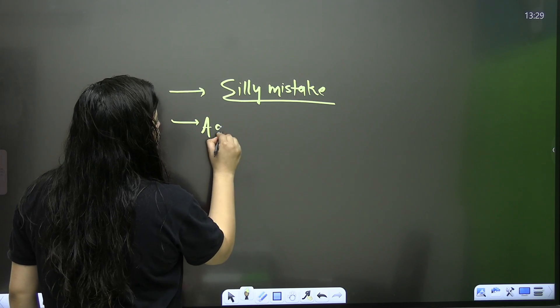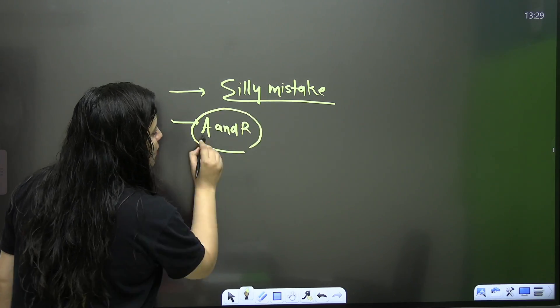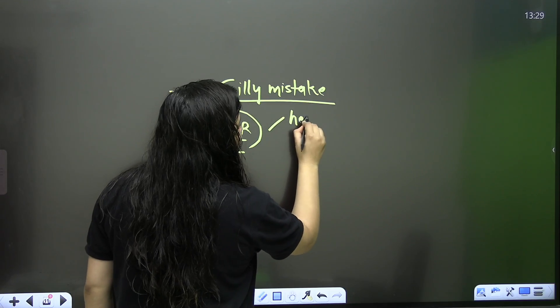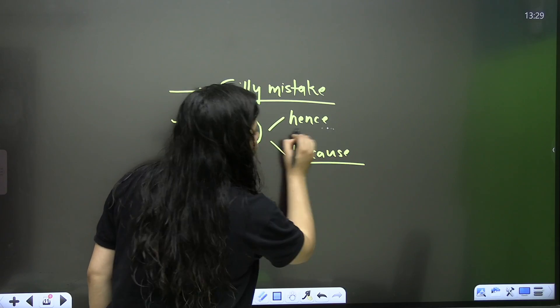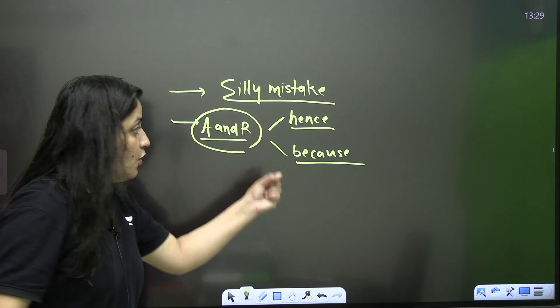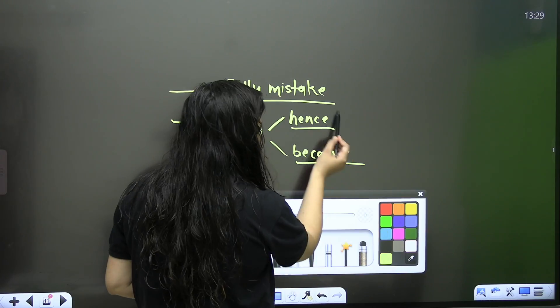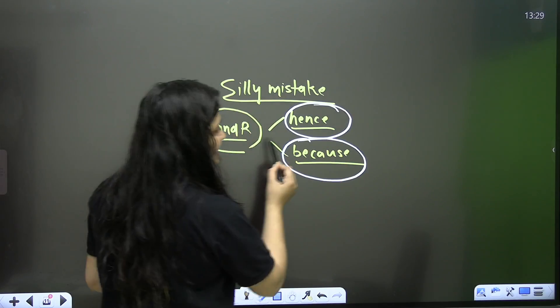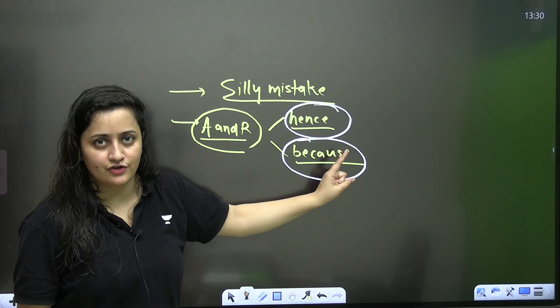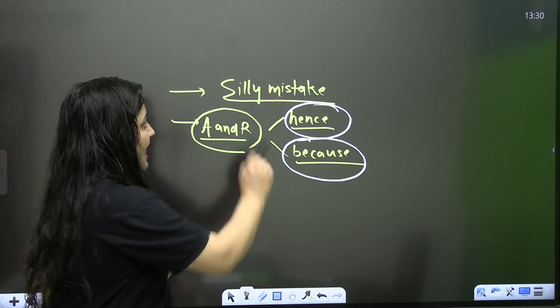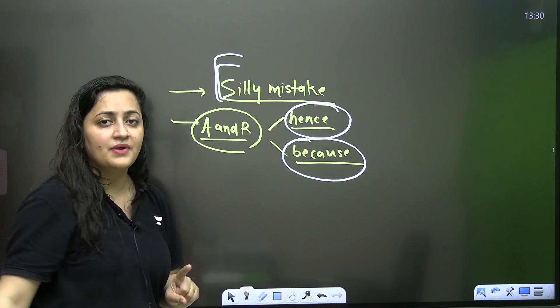See, when it comes to assertion and reason-based question, while reading NCRT, wherever hence is given, wherever because is given, read that statement very carefully. Most of the time when it comes to your assertion and reasons, they used to come from the statement where hence is given in NCRT, where because is given in NCRT, you can give it a try. And how to avoid the silly mistakes in paper.